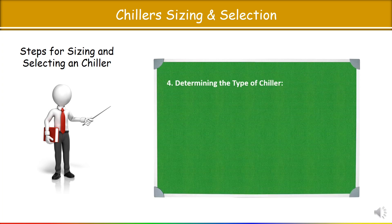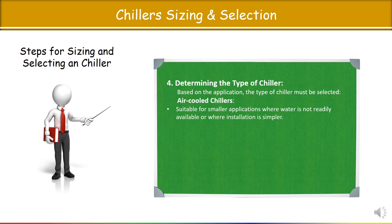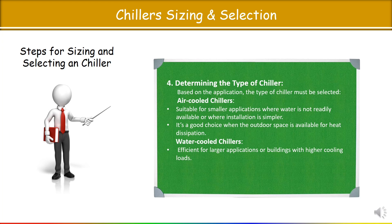Step 4: After calculating the actual cooling load including the diversity factor, you have to determine the type of chiller — air cooled or water cooled. Based on the application, the type of chiller must be selected. Air cooled chillers are generally suitable for smaller applications where water is not readily available or where installation is simpler — a good choice when outdoor space is available for heat dissipation.